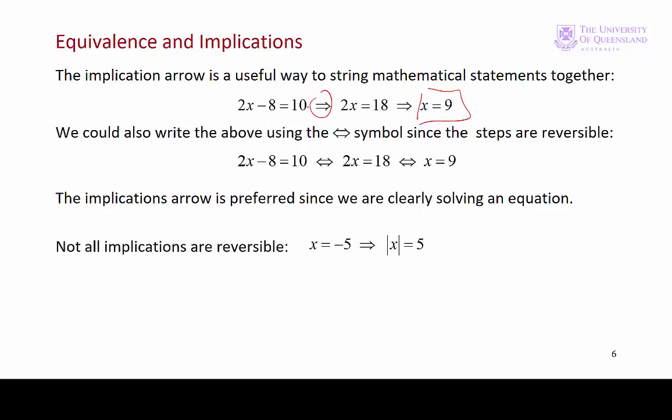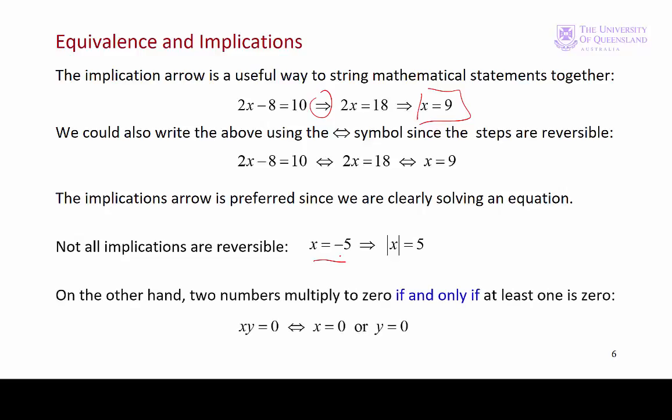So we can see that not all implications are reversible. x = -5 implies that |x| = 5, but the absolute value of x equaling 5 does not imply that x = -5. It could equal +5. Another example is the case where we have two numbers multiplying to zero. That'll be the case if and only if at least one is equal to zero. So xy = 0 is equivalent to saying x = 0 or y = 0.